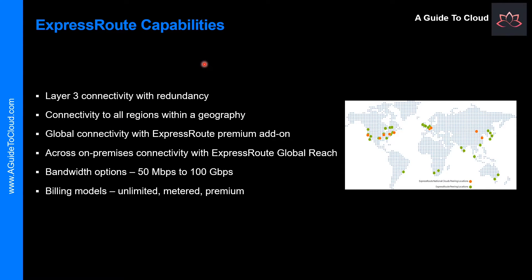Let's have a look at some of ExpressRoute's capabilities. ExpressRoute is supported across all Azure regions and locations. The following map provides a list of Azure regions and ExpressRoute locations. ExpressRoute locations refer to those where Microsoft peers with several service providers. You will have access to Azure services across all regions within a geographical region if you connect to at least one ExpressRoute location within that geographical region.